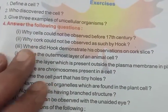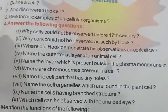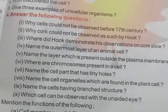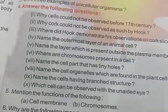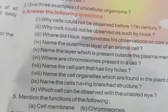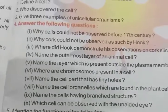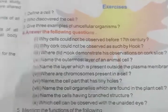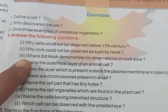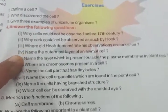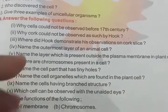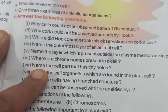Why could cork not be observed as such by Hooke — why did he have to put it under a microscope? Because cork is a solid structure, that's why it could not be observed directly. And where did Hooke demonstrate his observations on the cork slice? He demonstrated these observations at the Royal Society of London.